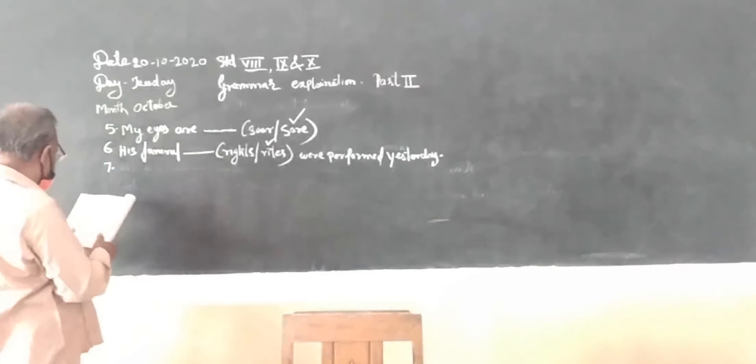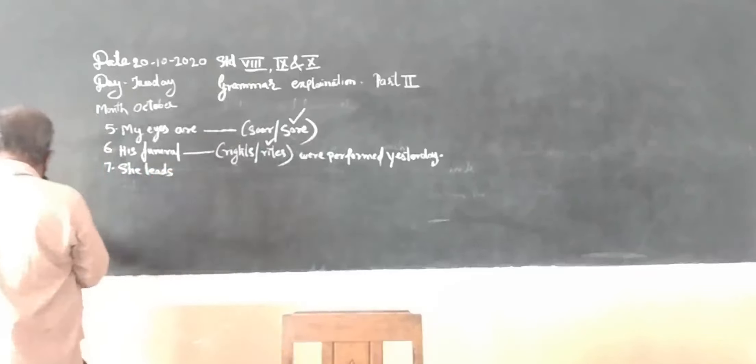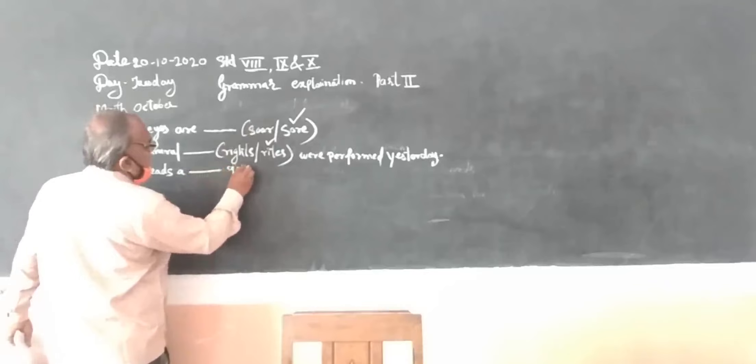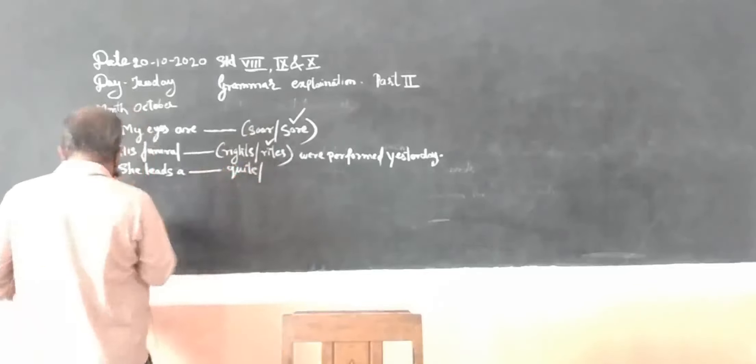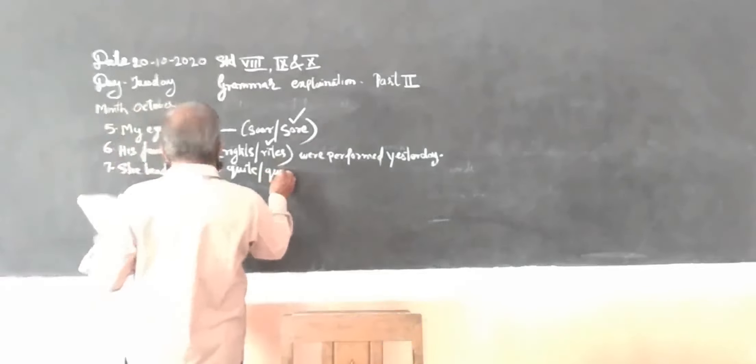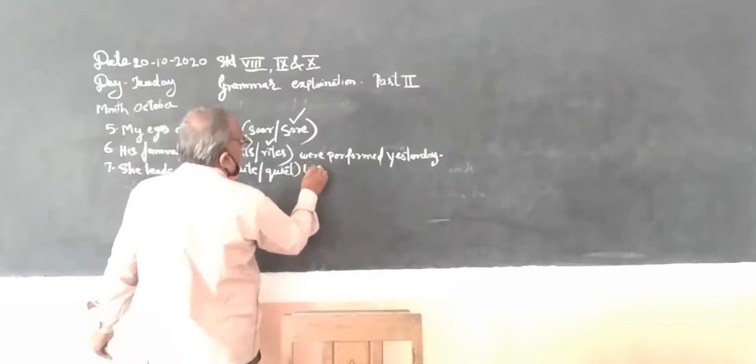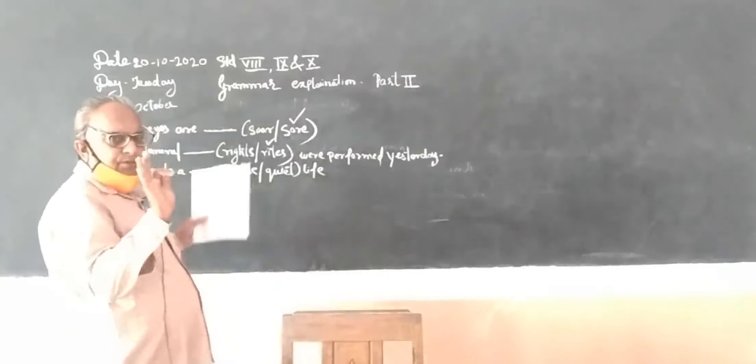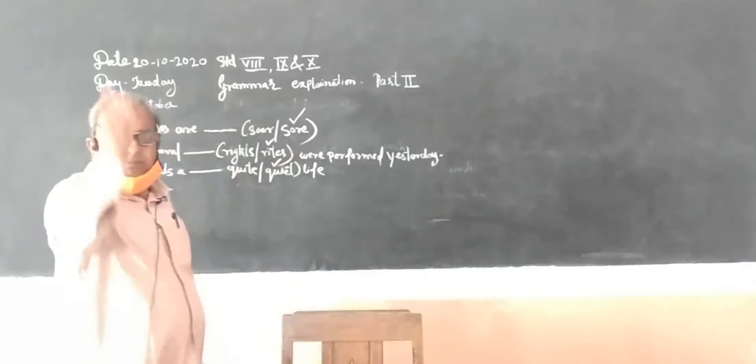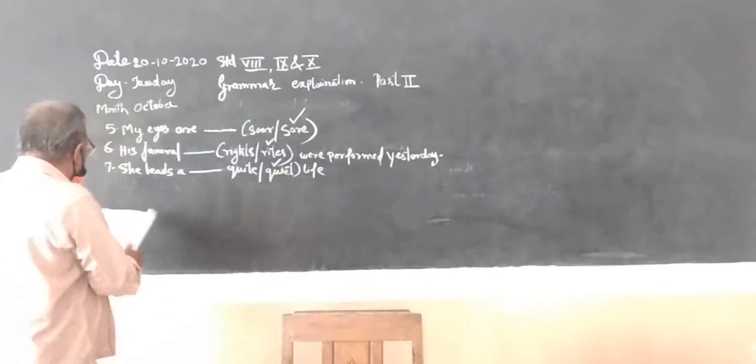Number seven: she leads a Q-U-I-E-T quiet, Q-U-I-T-E quite, life. Quiet means shant, peaceful life. So this quiet is applicable, not quite. Quite means exactly. Here quiet means shant, peaceful life.